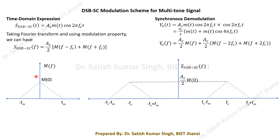The resulting spectrum spans from fc−fm to fc+fm (upper sideband) and its mirror image (lower sideband), with magnitude (ac/2)·M(0) at the band edges near fc. Importantly, there is no impulse function at f = ±fc, unlike conventional AM where impulses at ±fc were present.